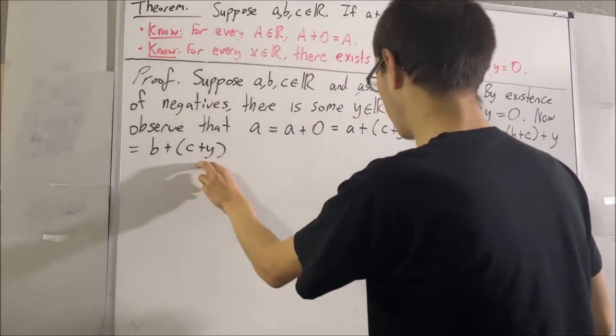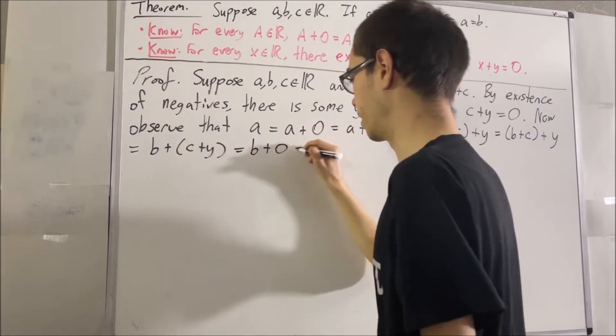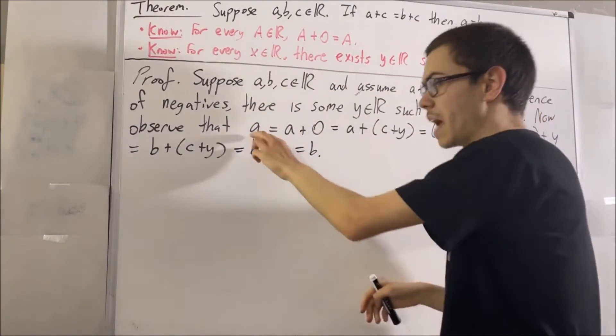But again, C plus Y is equal to 0, and B plus 0 is equal to B. So through this chain of equalities, we see that A is equal to B.